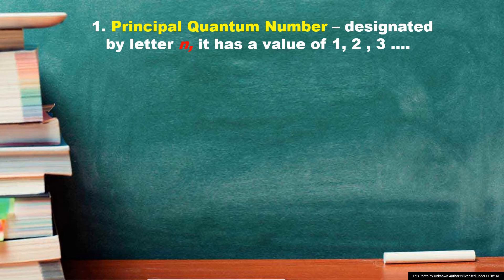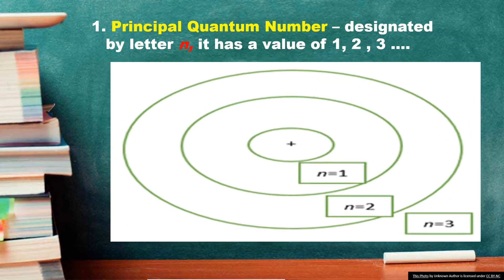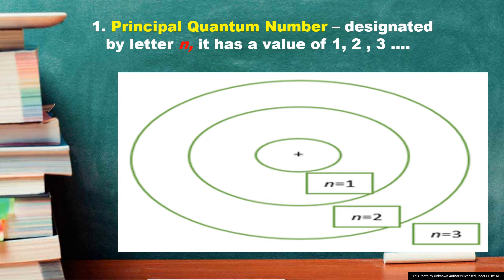The first quantum number is the principal quantum number, designated by letter N. It has a value of 1, 2, 3, and so on, and it represents the energy level of the electron. The larger the value of N, the farther away from the nucleus. Electrons normally exist in the lowest energy state, called the ground state. When an electron goes into a higher energy state, it is said to be in an excited state.